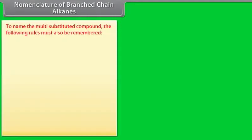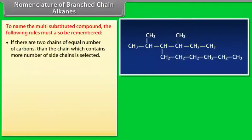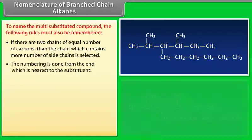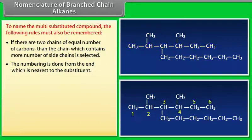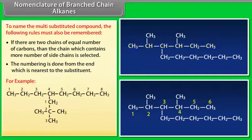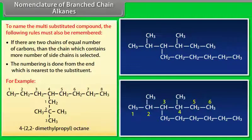To name multi-substituted compounds, the following rules must be remembered: if there are two chains of equal number of carbons, the chain which contains more side chains is selected. Numbering is done from the end nearest to the substituent. For example, the IUPAC name of the given compound is 4-(2,2-dimethylpropyl)octane.